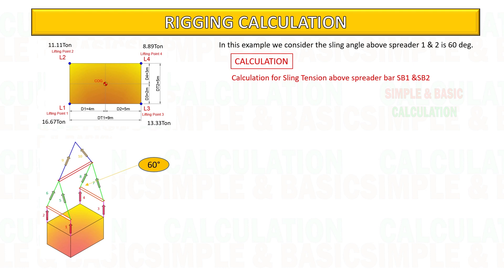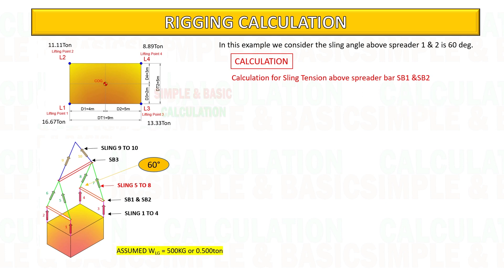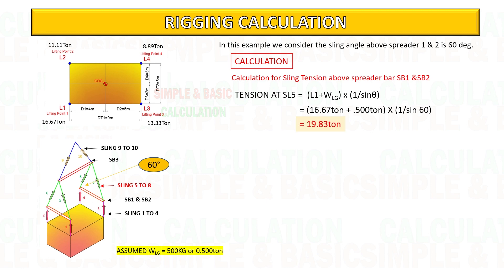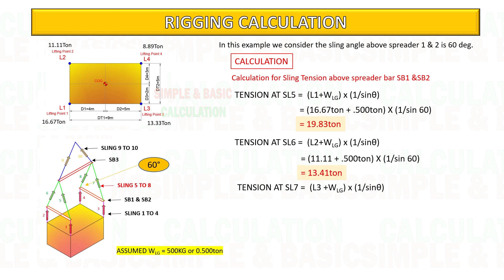Based on the formula given, you can start to calculate the tension in each sling. See the calculation below — you can pause the video and try to follow the calculation. Please take note: we need to add the weight of the lifting gear below, and add it to the load in each lifting point — weight of spreader bar plus sling and shackle. In this example, I have assumed the weight of the lifting gear.